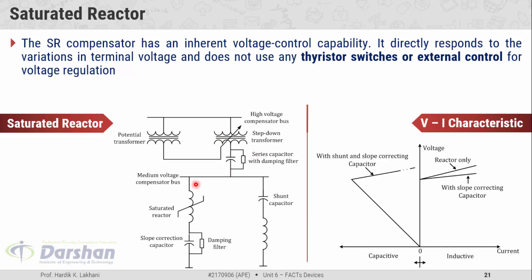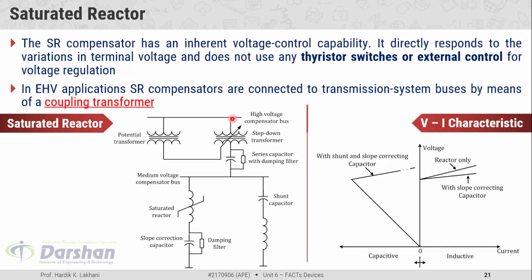The task of the saturated reactor is to control the voltage at that point of the system. In extra high voltage applications, saturated reactor compensators are connected to the transmission system buses by means of a coupling transformer. In the VI characteristics, the X axis represents the current passing through the saturated reactor, and the Y axis represents the voltage across the saturated reactor.